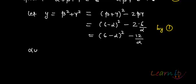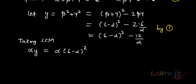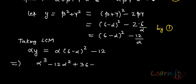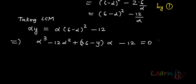Now consider α·y. Taking LCM, α·y = α·(6 - α)² - 12, which implies a cubic in α: α³ - 12α² + (36 - y)α - 12 = 0. This is another cubic relation; let's mark it as equation 2.